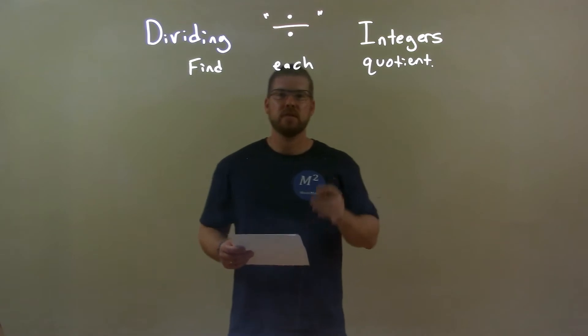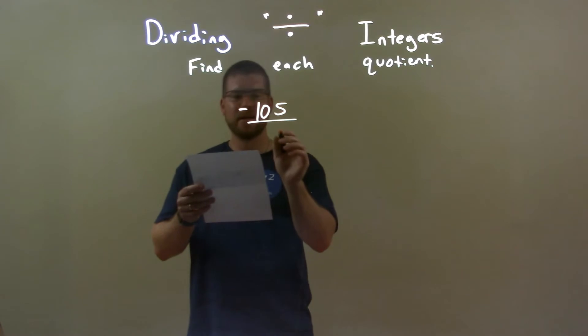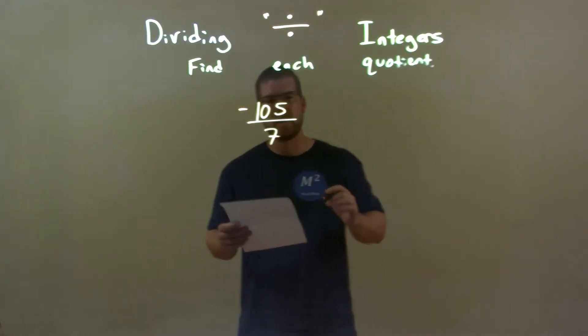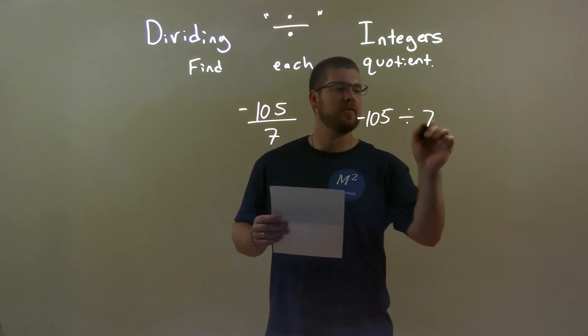So, if I was given these integers, negative 105 divided by 7, well, we know it's also the same thing as this, negative 105 divided by 7.